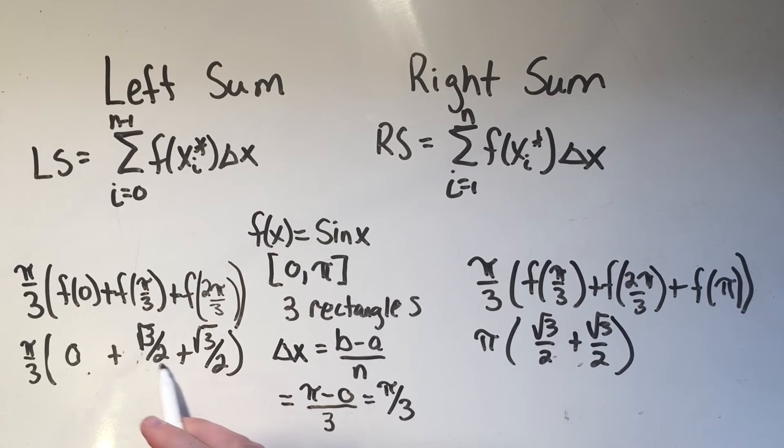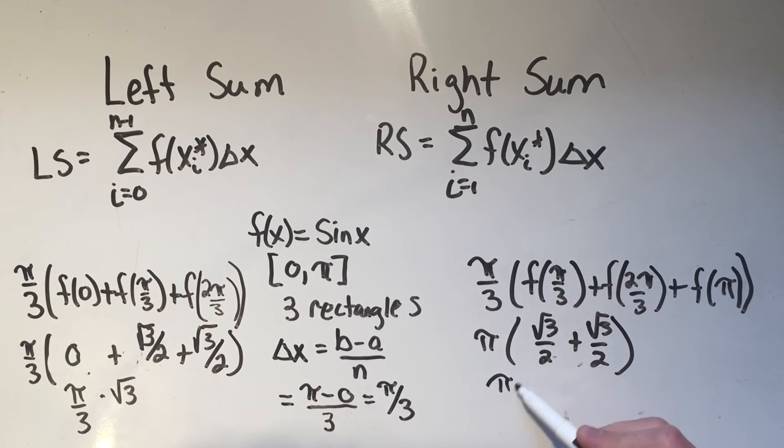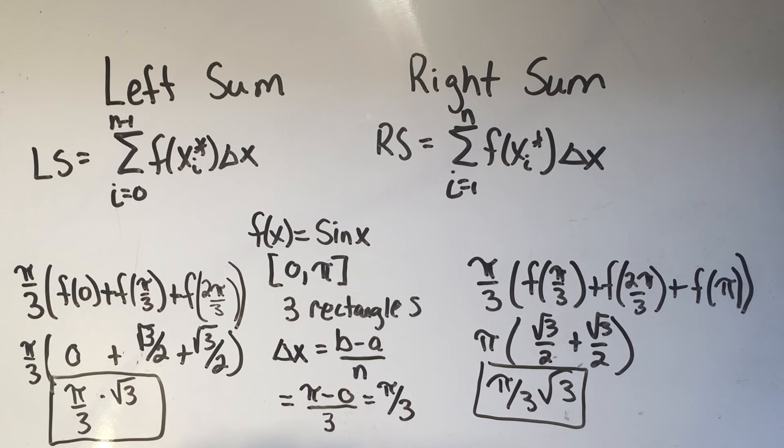Well, square root of three over two, plus square root of three over two, that's two square root threes over two, and the twos will cancel. That'll just give me a square root three. Same thing here. And that's just going to be your answer. Pi over three times the square root of three, for both of them. And if you want, you can punch that into a calculator, get an approximate answer, but I would probably leave your answers in exact form, just like this.